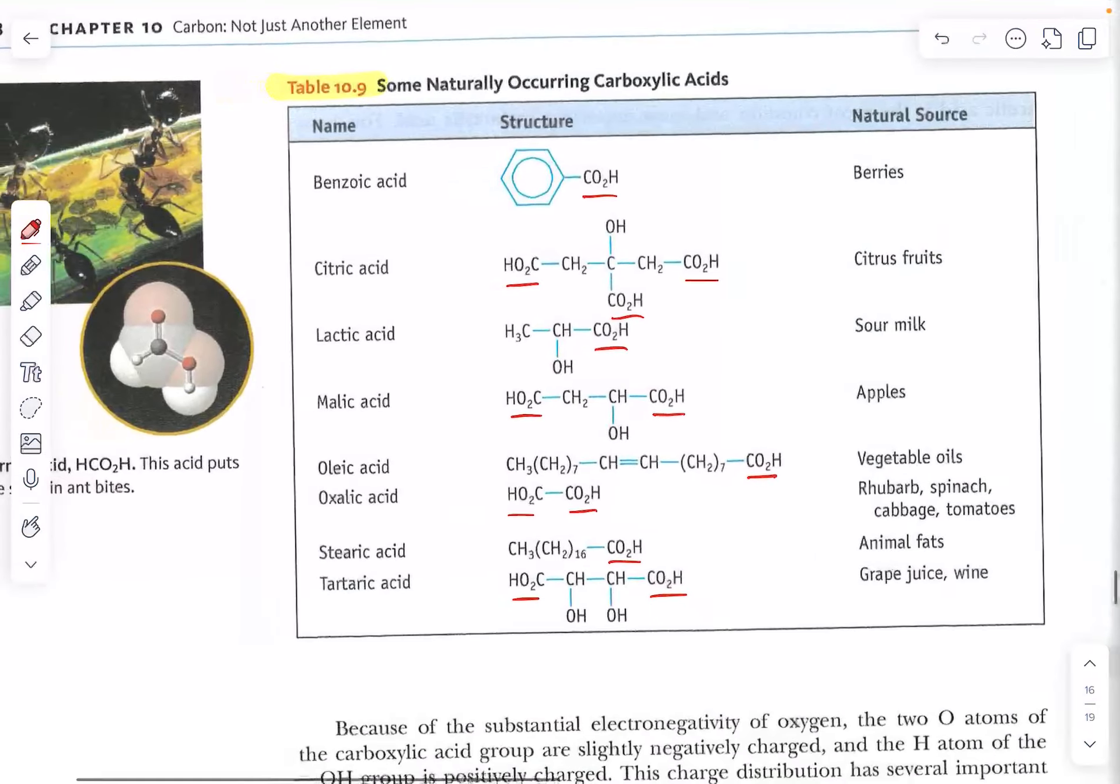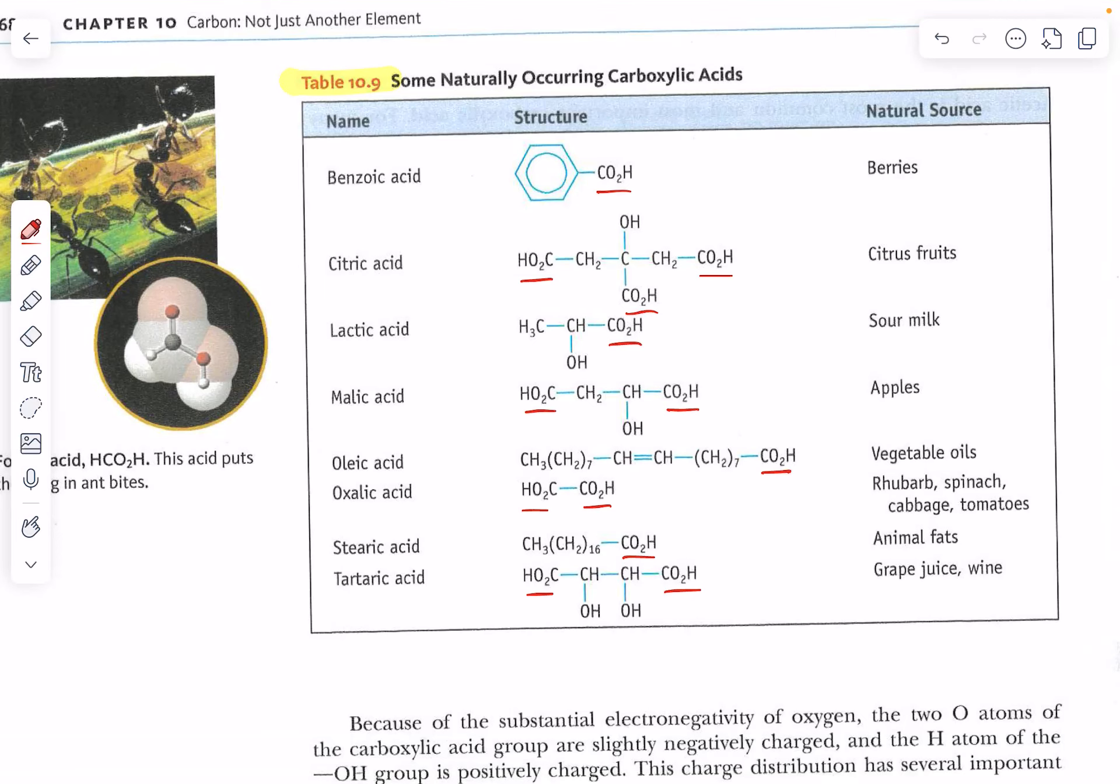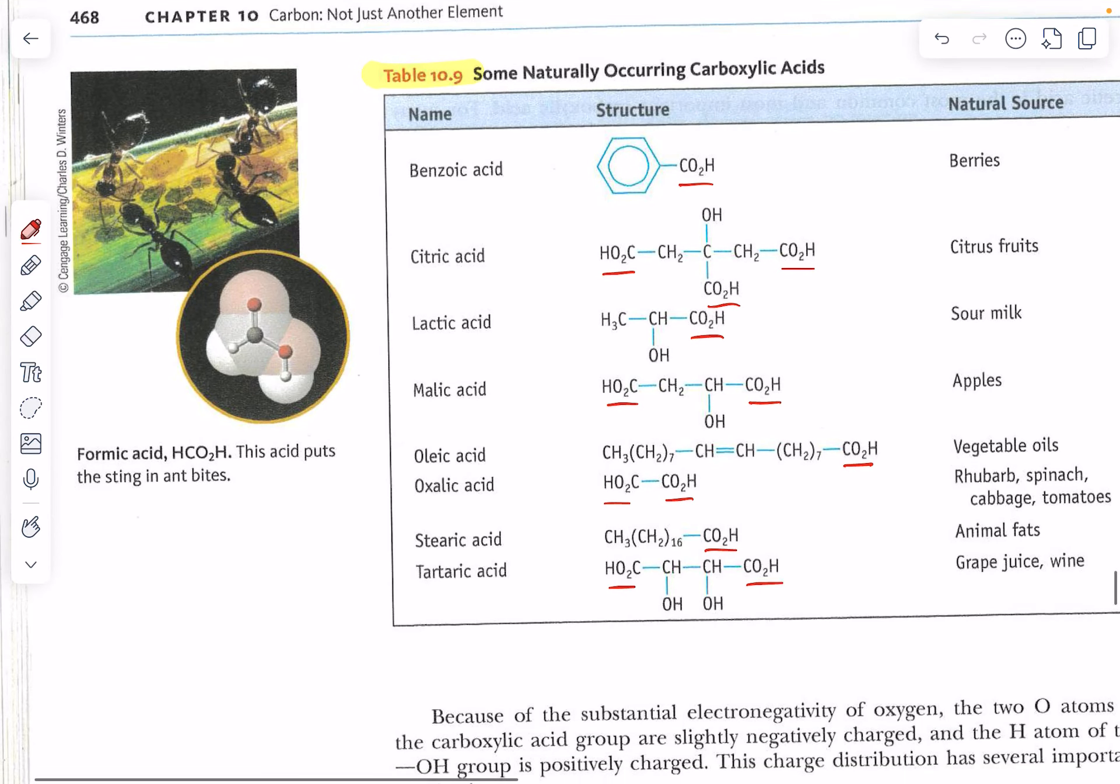Now here we have some naturally occurring carboxylic acids we already mentioned a simple one formic acid with its C=O and OH being C with the double bonded oxygen for the carbonyl there's my hydroxyl here's where it's attached to a hydrogen and of course we can put carbon groups in place of that hydrogen to make other kinds of organic or carboxylic acids. This comes from ants it's also part of the sting in an ant bite if you ever get one of those there are so many kinds of ants are fascinating.